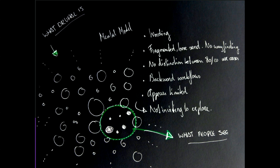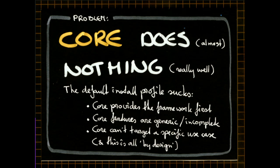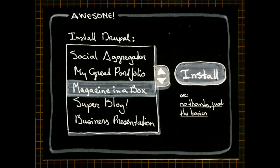This reminds me of a core composition conversation I would have had five or six years ago if not for a volcano in Iceland. The problem is: Drupal can do everything, but Core does almost nothing really well. The idea was to provide install profiles with sample content so that people can choose to build their first portfolio, a great blog, or a business website — give people presets and help them become successful.